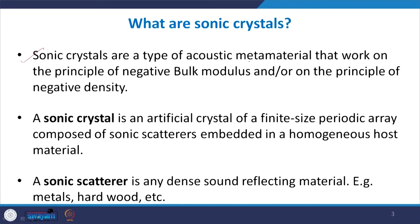In sonic crystals, sometimes B becomes less than 0, or in some cases both B and rho become less than 0. When one quantity is less than 0, it can act as a sound-attenuating material — it can block sound waves. But when simultaneously both parameters become less than 0, the sonic crystals can act to bend sound waves very sharply. So sonic crystals work on the principle of either negative bulk modulus and/or the principle of negative density.